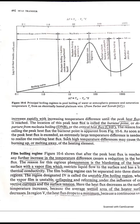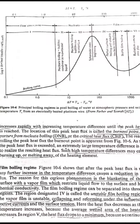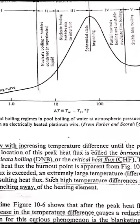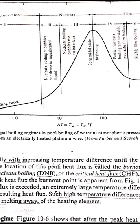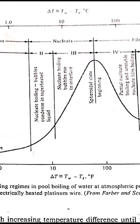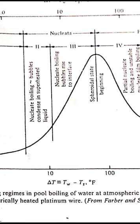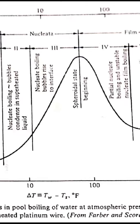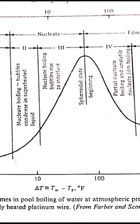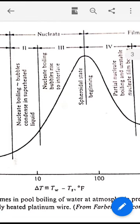Now, I will discuss correlations to determine nucleate boiling heat flux and the value of critical heat flux or maximum or departure. This peak heat flux is called peak heat flux or critical heat flux or departure from nucleate boiling, DNB. Or it is also called as a burnout point. Why is it called burnout point?